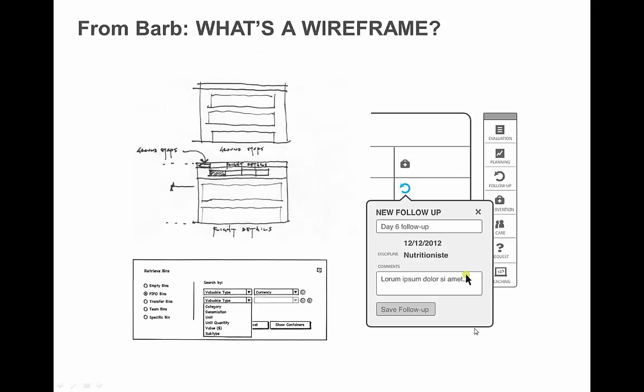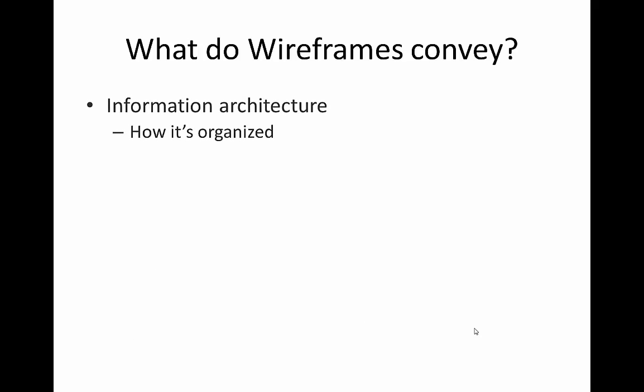Here are some other examples from your lecture from Barb from last year. So, what do wireframes tell us? They show us the information architecture of the website or app — in other words, how it's organized.